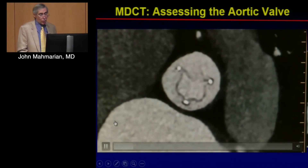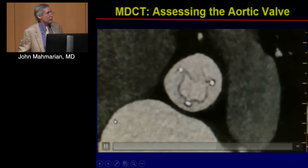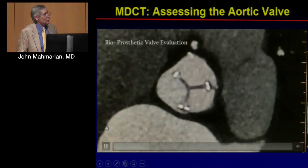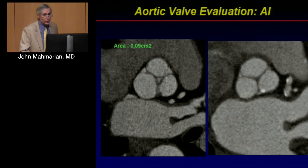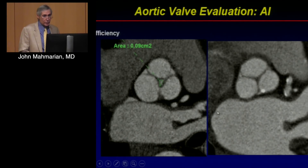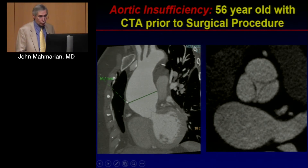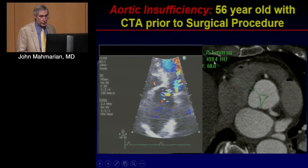We can also assess already-implanted valves. Here is a bioprosthetic valve demonstrating the high fidelity of CT images for both native and prosthetic valves. We assess aortic insufficiency in diastole by looking for gaps in the leaflets compared to normal valves. This patient had a very large aortic aneurysm with severe AI, and the effective regurgitant orifice area confirmed severe disease.